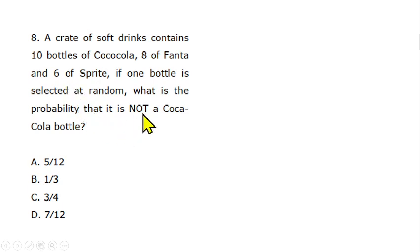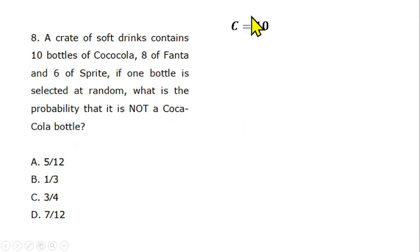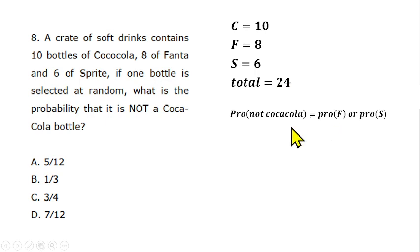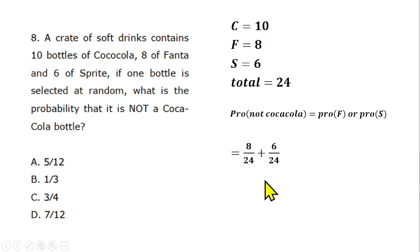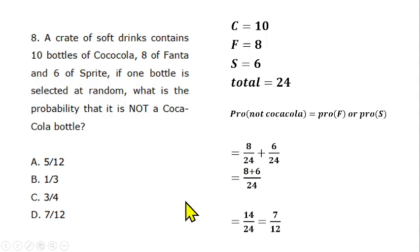Question 8 is from probability. A crate contains 10 Coca-Cola, 8 Fanta, and 6 Sprite bottles — 24 total. The probability of not selecting a Coca-Cola bottle equals P(Fanta) plus P(Sprite) = 8/24 plus 6/24 = 14/24 = 7/12. Option D is the correct answer.